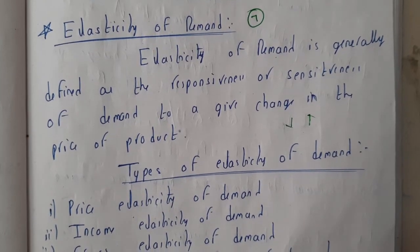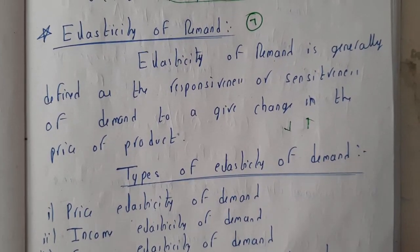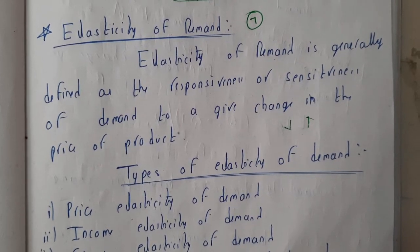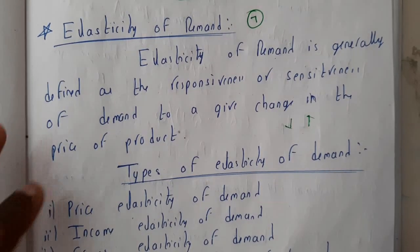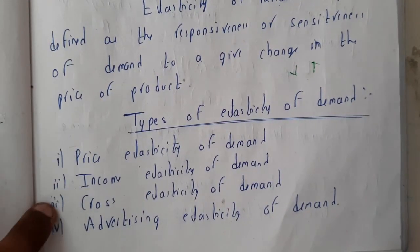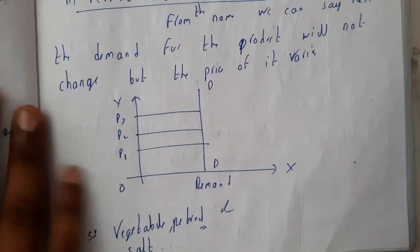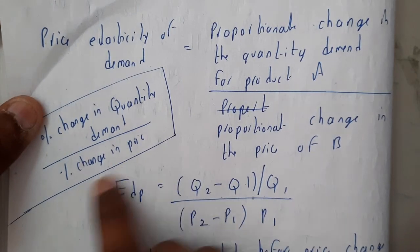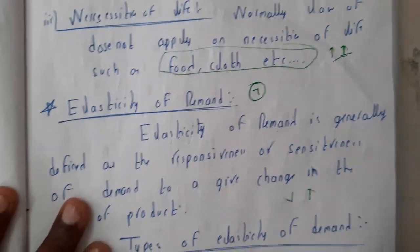Hello guys, we are back with our next lecture. In this lecture, let us go through elasticity of demand. Elasticity of demand is the percentage change in something by change in price. We have four different types: price, income, cross, and advertising. If we consider price, it is the percentage change in quantity demanded by change in price. Let us first go through the definition to get a clear idea.